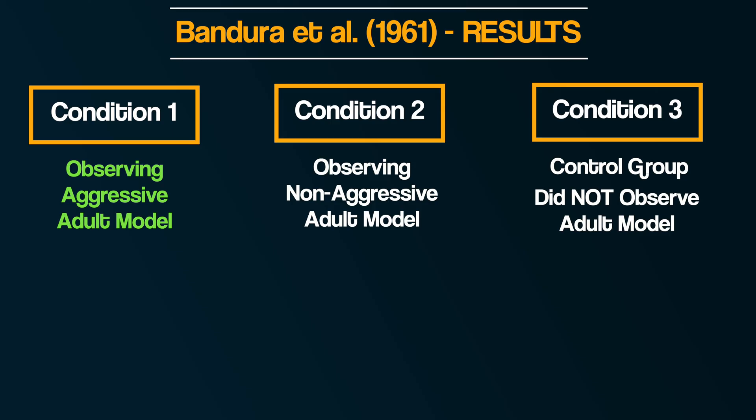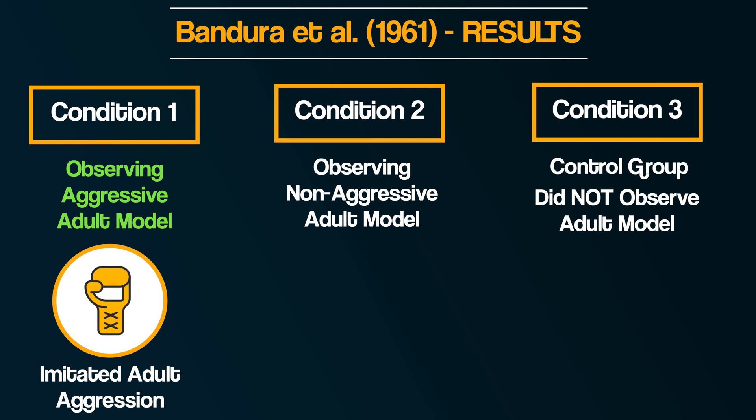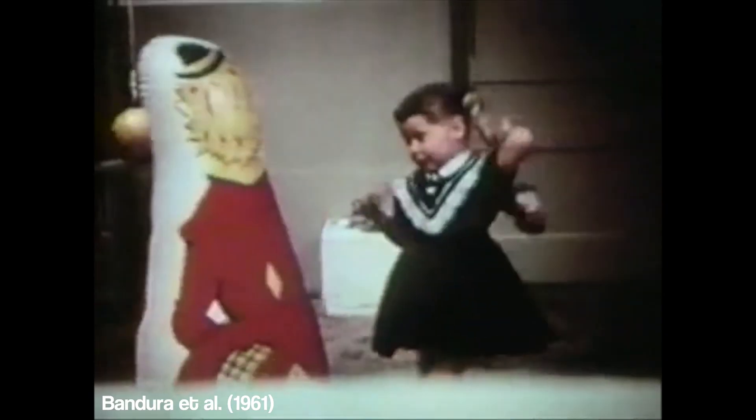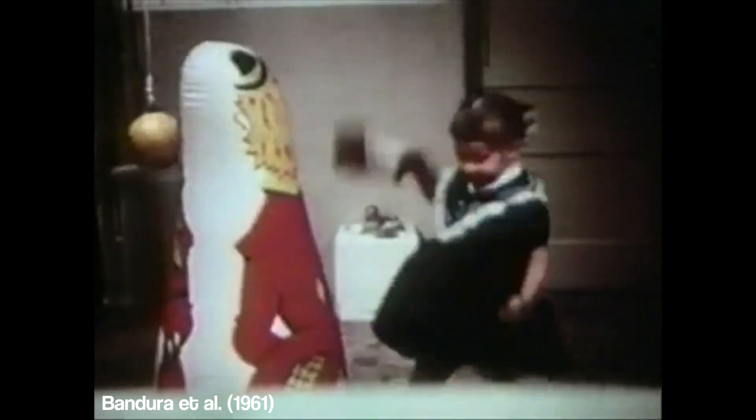In Condition 1 with the aggressive model, the child did exactly what they saw the model do — aggressive behavior all over the place. They not only imitated many of the aggressive behaviors they observed the adult model do, but also carried out other aggressive behaviors against the Bobo Doll that they hadn't seen the model do.